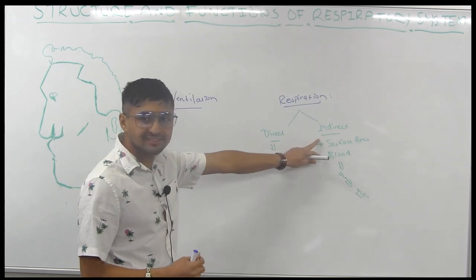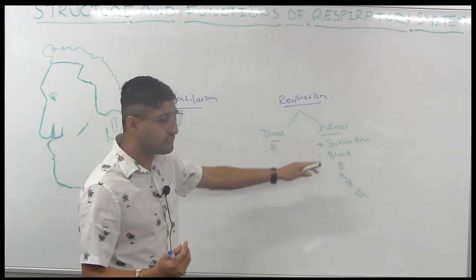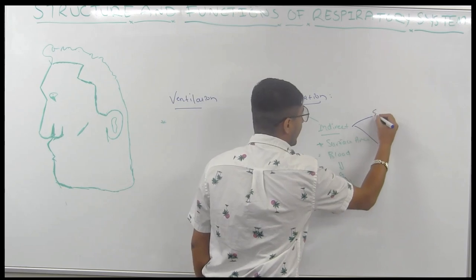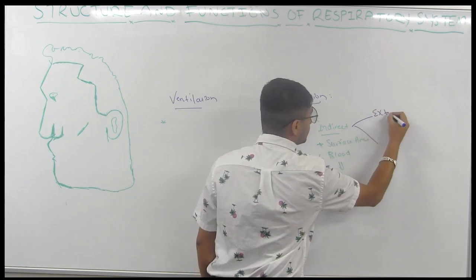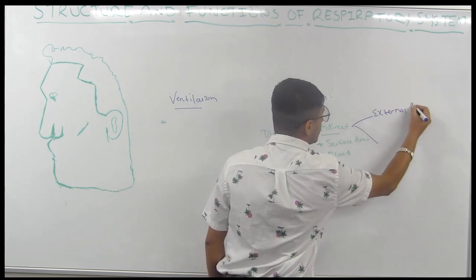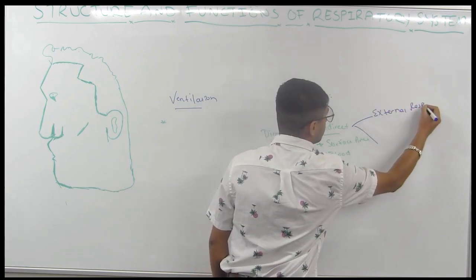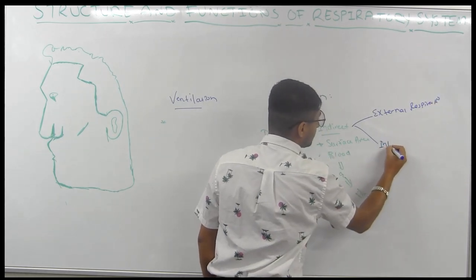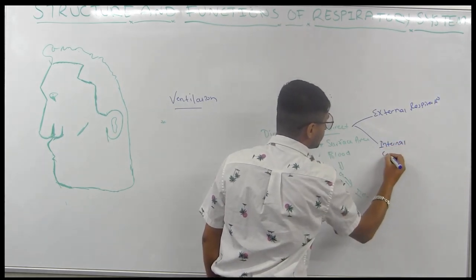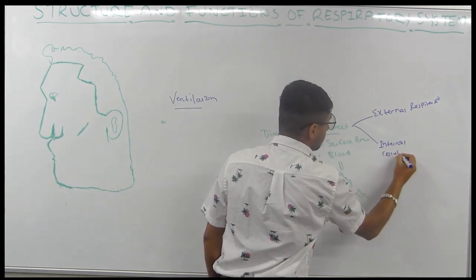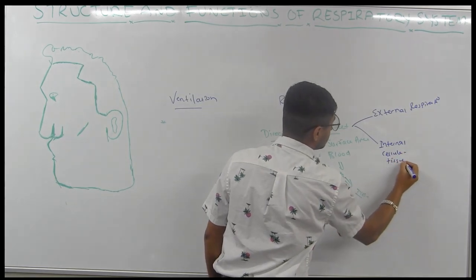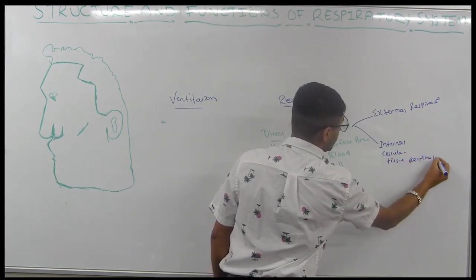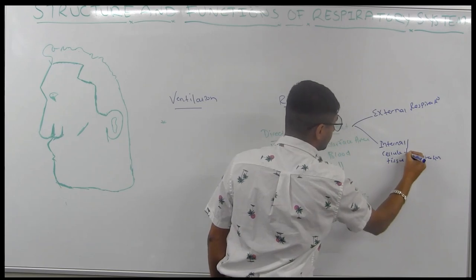Indirect respiration itself is divided into two parts. In humans, we have external respiration and then internal respiration — also called cellular or tissue respiration. These mean the same thing, just different names.